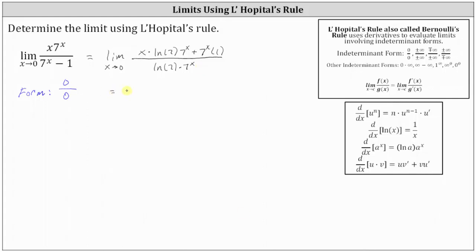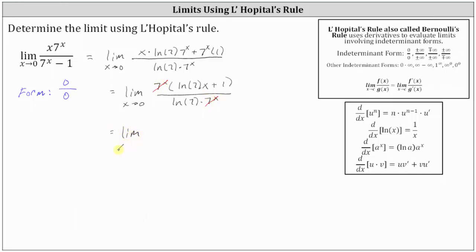Now let's simplify. Notice both the numerator and denominator have a common factor of seven to the power of x. Let's factor out seven to the power of x from the numerator, which leaves us with seven to the power of x times the quantity natural log seven times x plus one. Notice in this form we have seven to the power of x divided by itself, which simplifies to one. And now we have the limit as x approaches zero of natural log seven times x plus one, all divided by natural log seven.